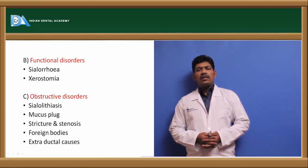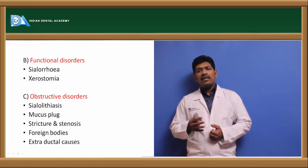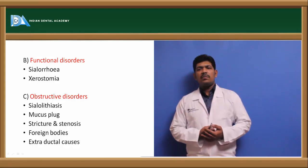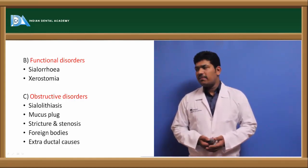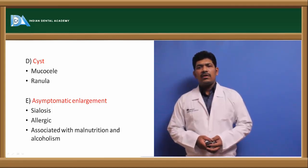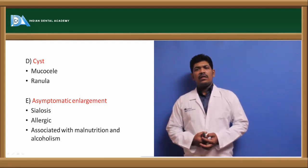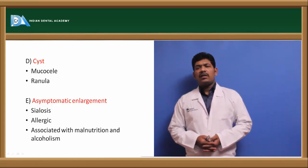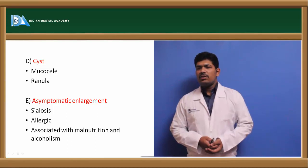We also have obstructive disorders, where development and function are fine, but because of secondary etiologies — arising from within the salivary glands itself or externally — there is obstruction of saliva production, resulting in xerostomia not due to an inherent gland disorder but a secondary factor. Additionally, there is a class of cysts including mucoceles and ranulas, and asymptomatic enlargement such as allergic, sialosis, or enlargements related to malnutrition or habitual causes.